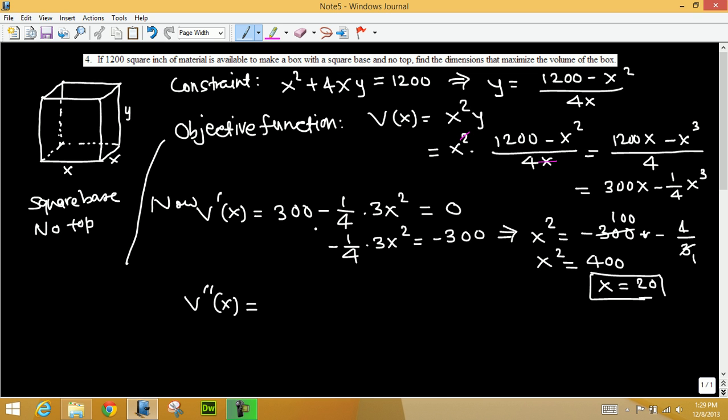Derivative here, this is the first derivative. Derivative of 300 is 0, minus 3/4, minus 3/4 times derivative of x squared is 2x. That's in fact 2 times 3/4, so negative 3/2 x. That's the second derivative. Now we want to evaluate this second derivative at x equals 20.